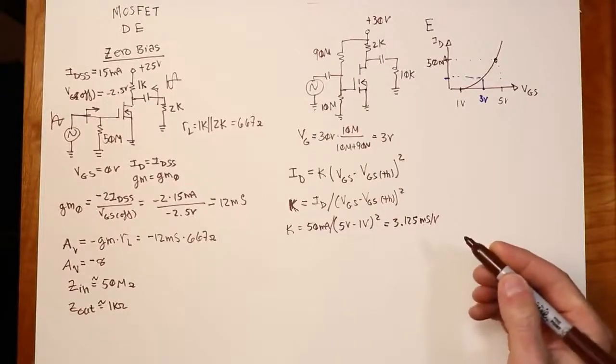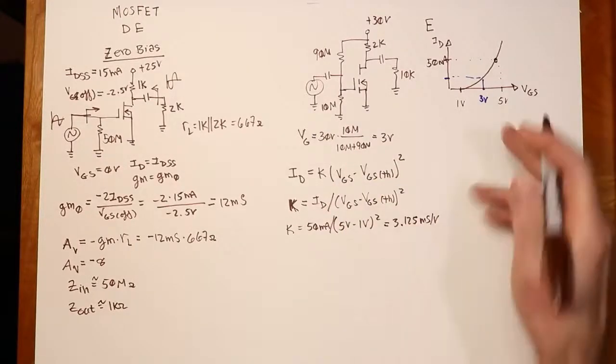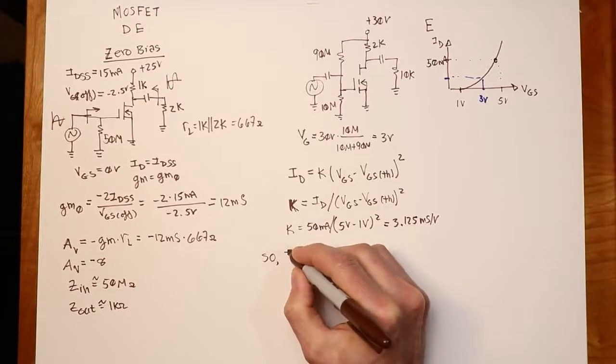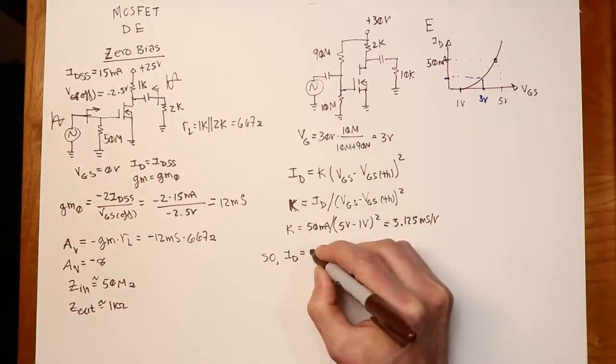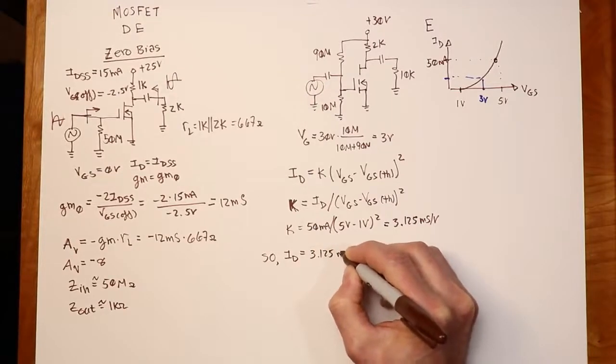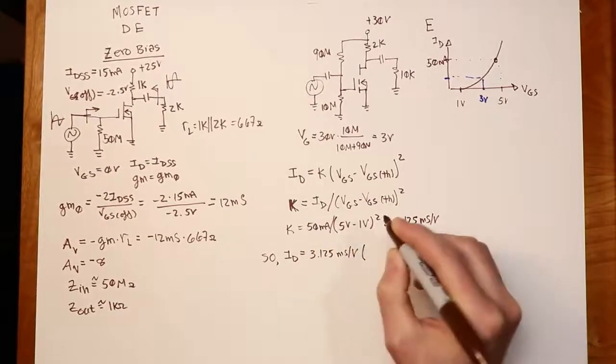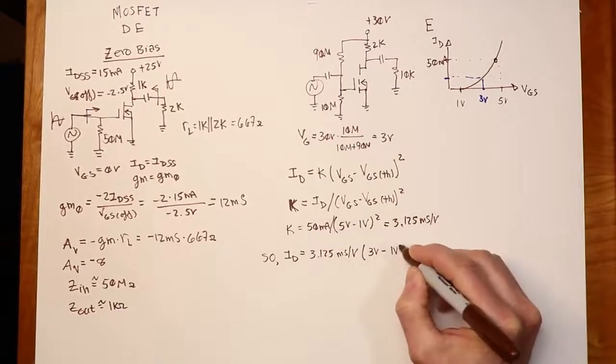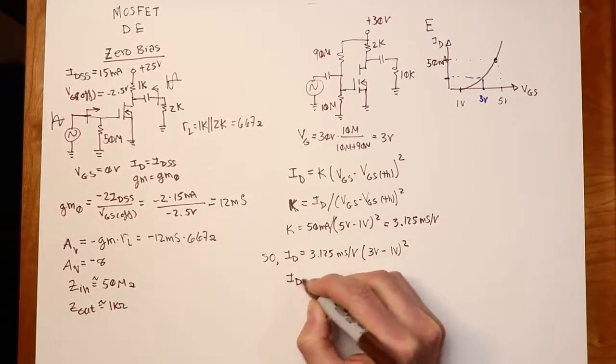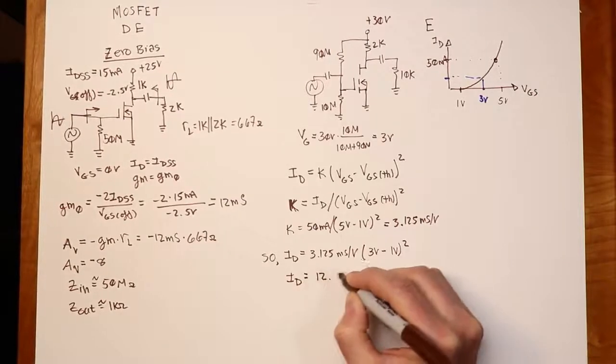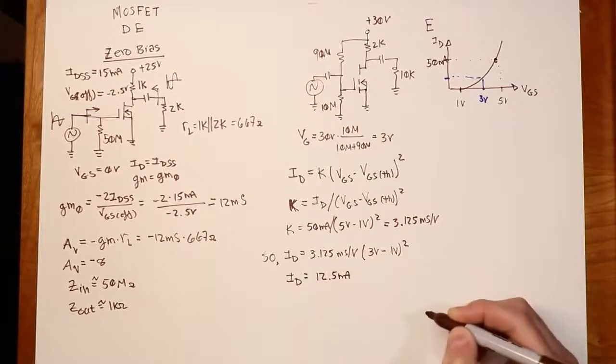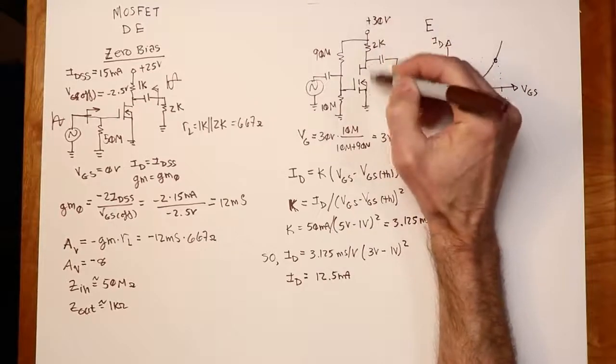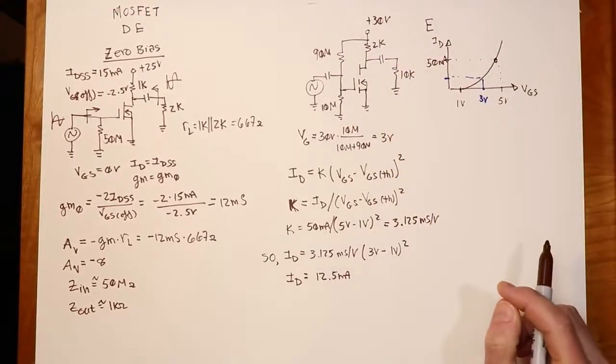All right. So now I know the K value. I can turn around and plug in this equation for my 3 volts. So ID is going to be K, 3.125 times my VGS, which is 3 volts, minus the threshold of 1 volt quantity squared. And ID works out to 12.5 milliamps. All right. 12.5 milliamps through the 2K would give us 25 volts. So with 30 volts supply, we'd have 5 volts sitting across the FET. Okay. So far, so good.